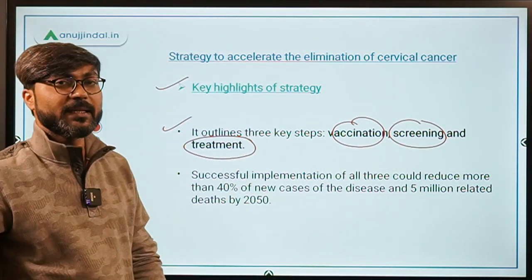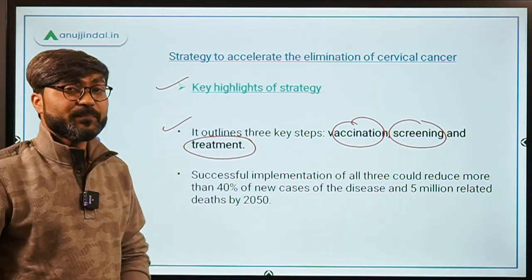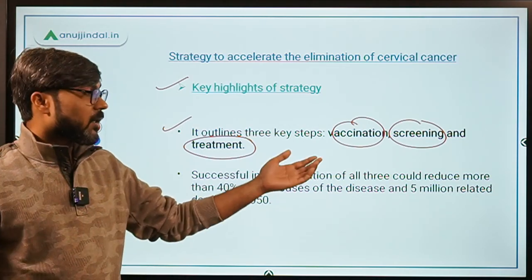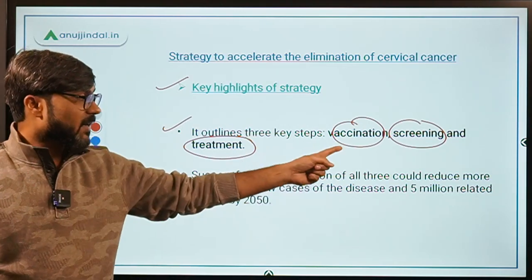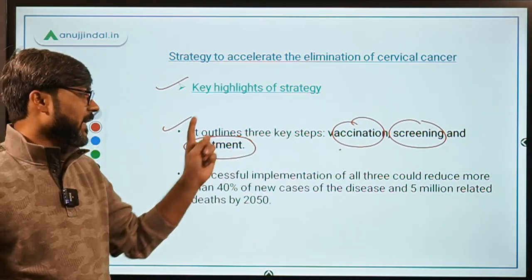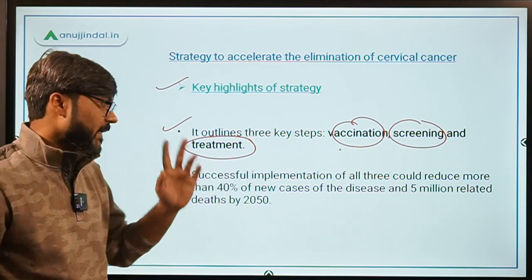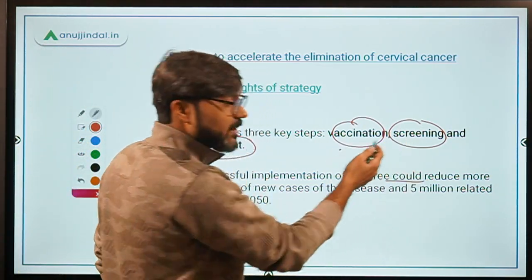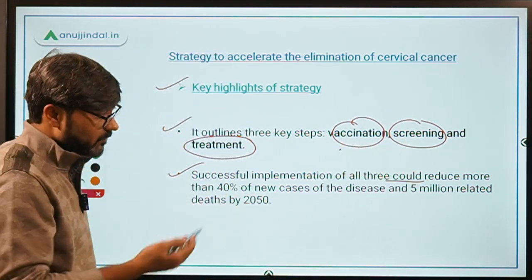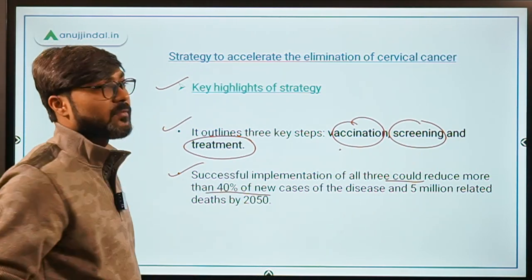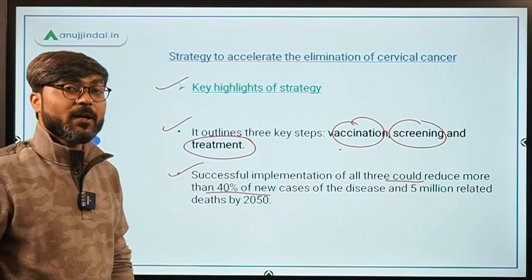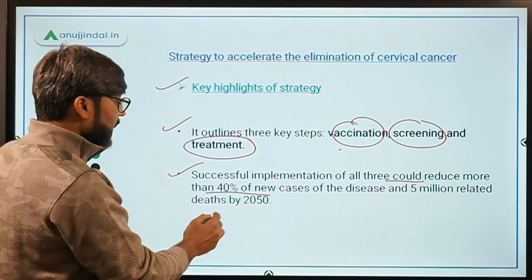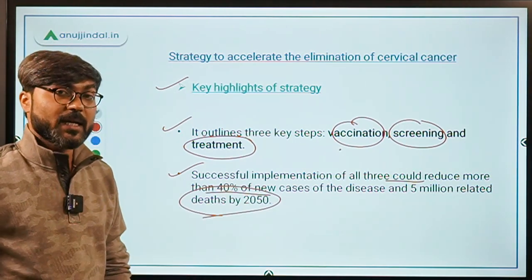Every country has to follow these three key steps — vaccination, screening, and treatment — to eliminate cervical cancer. Successful implementation of all three steps will reduce more than 40% of new cases of the disease and 5 million related deaths by the year 2050.